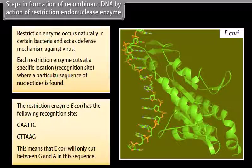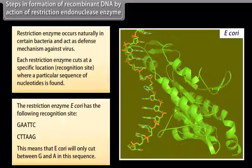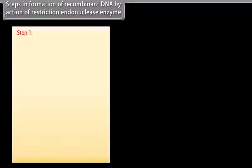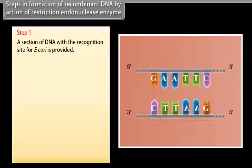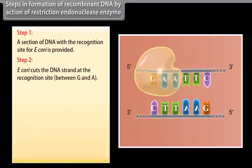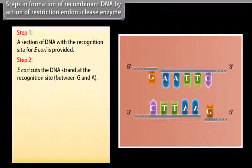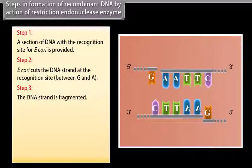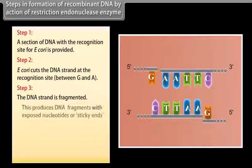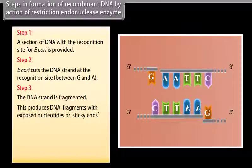Step 1. A section of DNA with a recognition site for E. coli is provided below. Step 2. E. coli cuts the DNA strand at the recognition site between G and A. Step 3. The DNA strand is fragmented. This produces DNA fragments with exposed nucleotides or sticky ends.